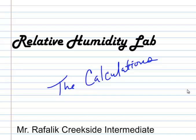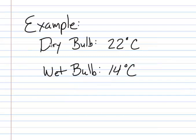Now let's take a look at how you calculate the relative humidity using the wet and dry bulb results that we got from our sling psychrometer. So let's say this was the sample data that we got. Our dry bulb temperature was 22 degrees and our wet bulb temperature was 14 degrees.